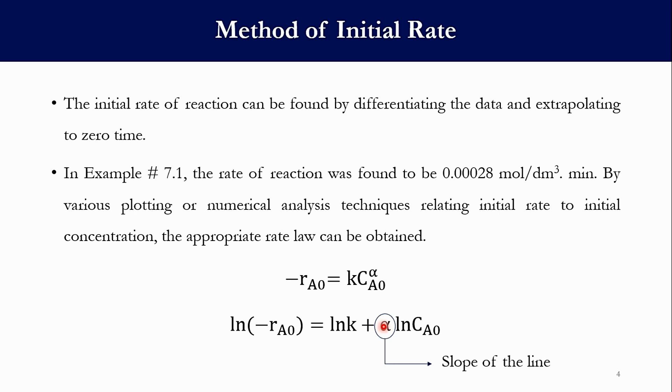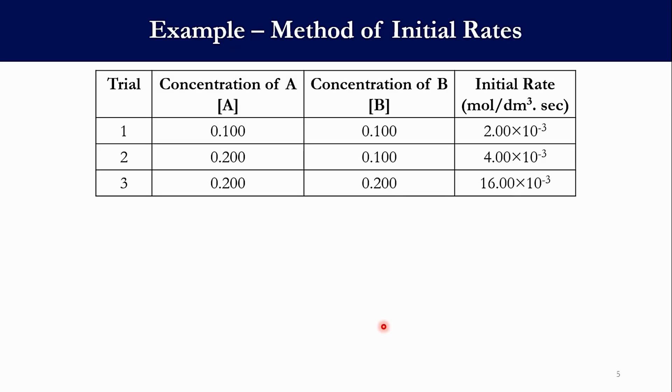Now we have seen the theoretical part of it and we will now be moving towards the example for real-time solving. So we have been given three trials, and for each trial we have been given the concentration of A, the concentration of B, and initial rate of reaction in mole per cubic decimeter per second. And we have been asked to compute the reaction orders and the value of K.